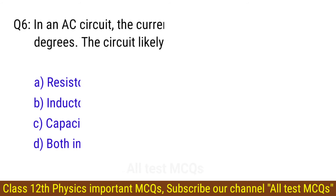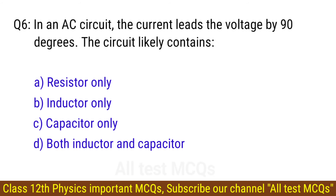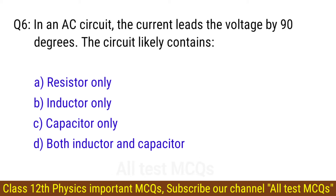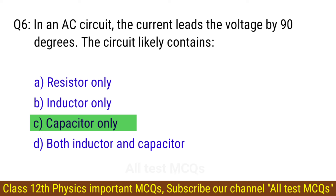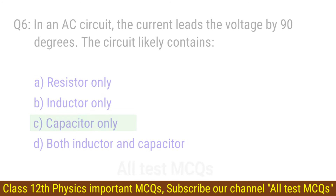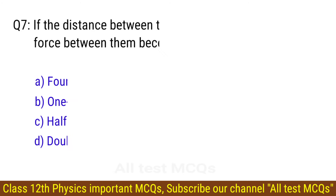Question number 6. In an AC circuit, the current leads the voltage by 90 degrees — the circuit likely contains? The right answer is option C: Capacitor only.